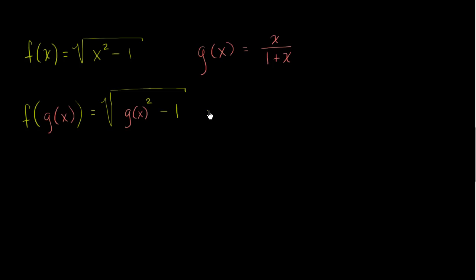Now what is g of x equal to? Well, g of x is this thing right over here. So this is going to be equal to the square root of g of x, which is x over 1 plus x. We're going to square that minus 1.